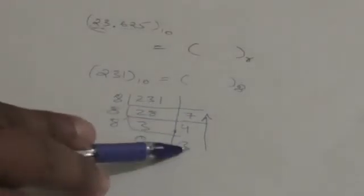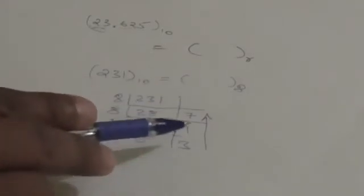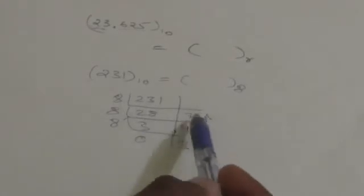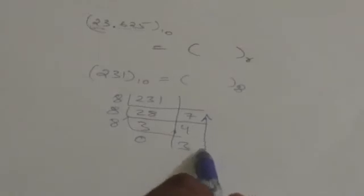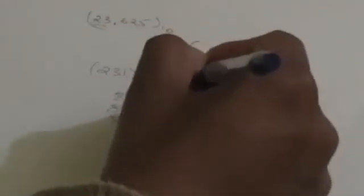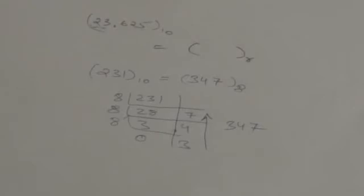Now we have to accumulate these remainders. We write them from bottom to top. The remainders we got are 7, 4, and 3. Writing from bottom to top gives us 347. So the required octal number is 347.